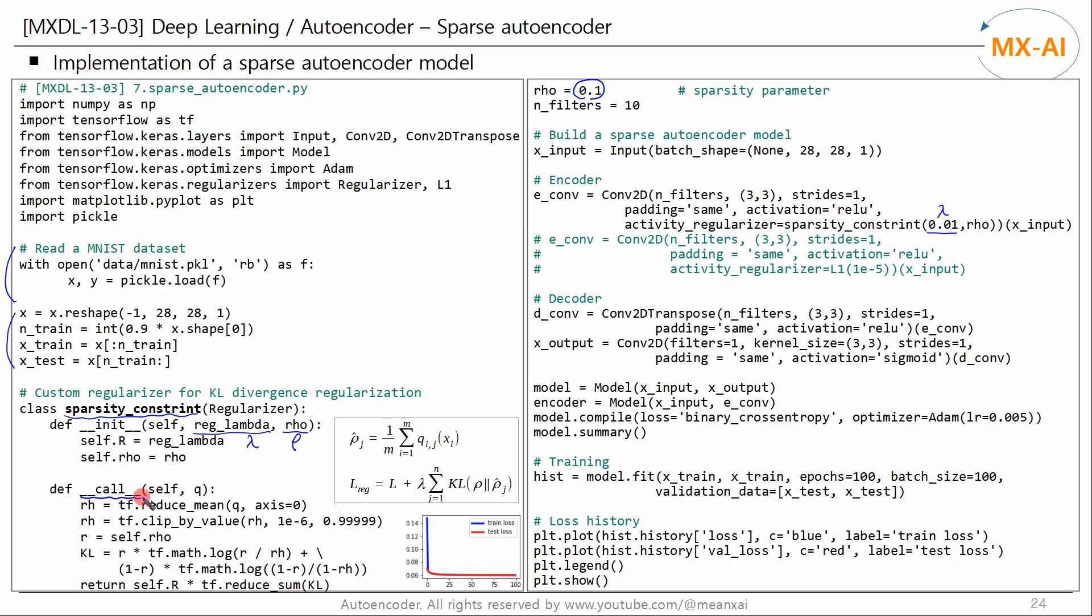And we write the call method. This method takes as input q, the outputs of the neural network layer. Computes the average values of q for each neuron in the neural network layer. Clips the average values outside the range of 0 and 1. And it calculates the KL divergence using rho and rho hat. Finally, it returns the regularization term.